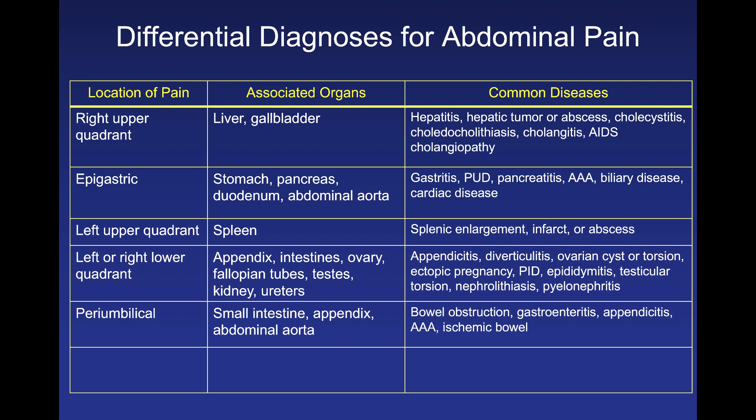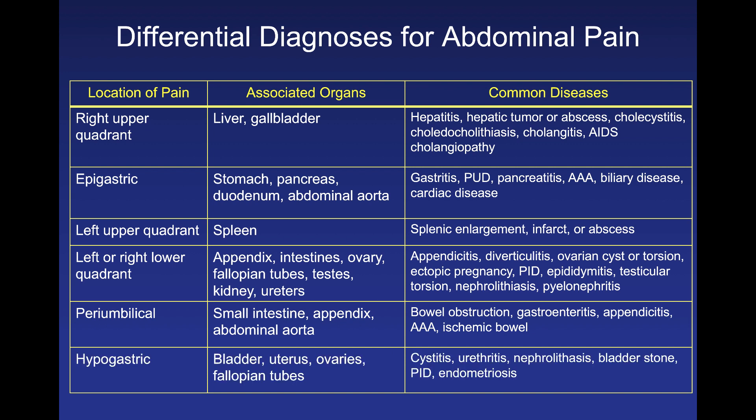Periumbilical pain is interesting — it can refer to the small intestine, the appendix (especially early in appendicitis before it localizes to the right lower quadrant), and the abdominal aorta. Think bowel obstruction, appendicitis, and ischemic bowel disease. Hypogastric pain can refer to the bladder, and in women, the uterus, ovaries, and fallopian tubes. Think cystitis, urethritis, nephrolithiasis, PID, and endometriosis. This location-based approach mapping to underlying organs is a very systematic way of thinking about abdominal pain.